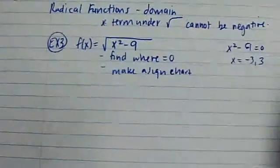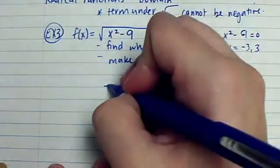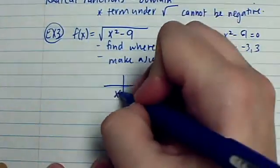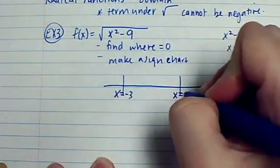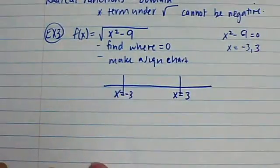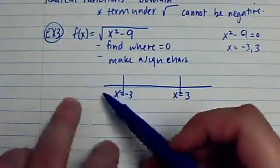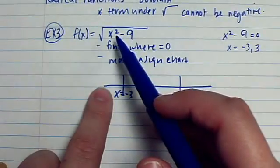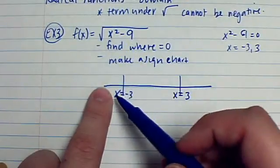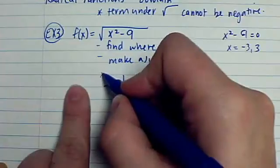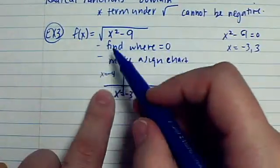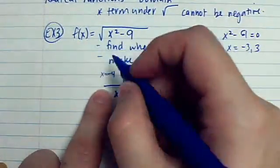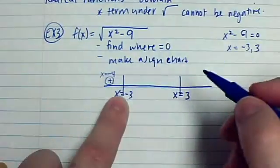Alright, so then, using those numbers, I'm going to create a sign chart. So, I have x equals negative 3 and x equals 3. I need to find values that are less than 3 here and plug it in to see what kind of number I get, if it's positive or negative. So, negative, let's say, let's plug in negative 4. Negative 4 squared is 16. 16 minus 9 is 7. Well, that's a positive number.